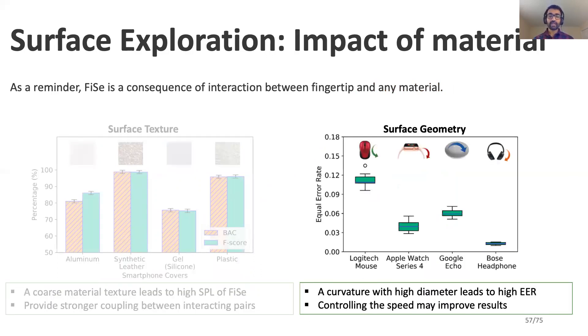To ensure that SonicPrint is adaptable across different smart devices, we asked users to swipe on Google's mouse, Apple Watch, voice assistant, and headphones. While a high curvature with higher diameter can lead to a high EER, controlling the speed might improve our results. Still, the current results show that SonicPrint is well-adopted in existing smart devices.